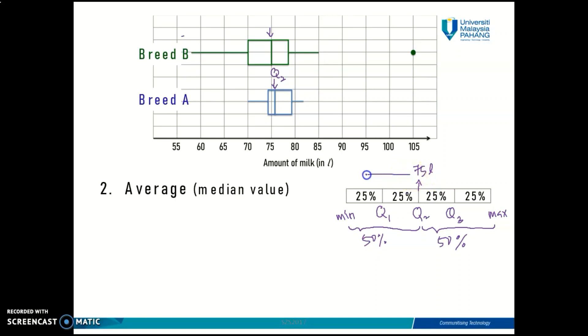This means that 50 percent of cows in Breed B produce milk less than 75 liters, and you can also say that 50 percent of cows in Breed B produce more than 75 liters. Is that clear? Same goes for Breed A—you can comment about the same thing. I'll give you a minute to digest that information.